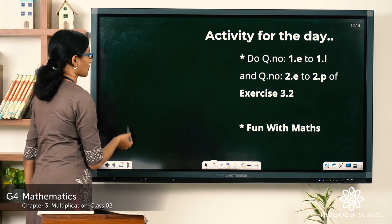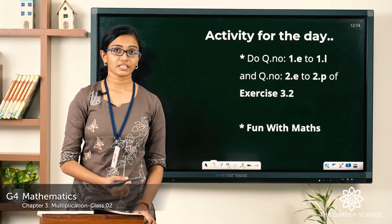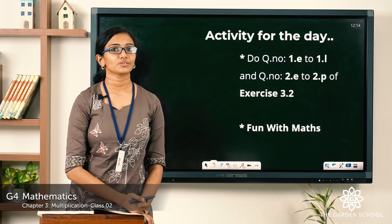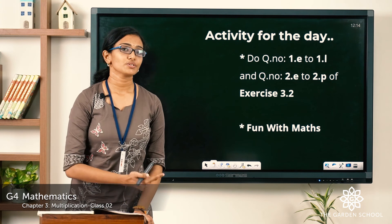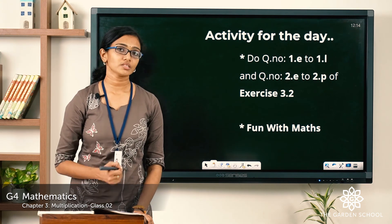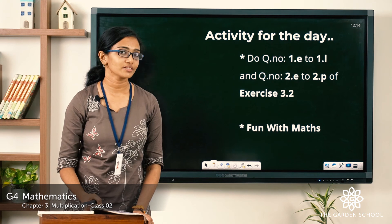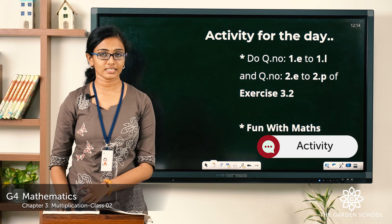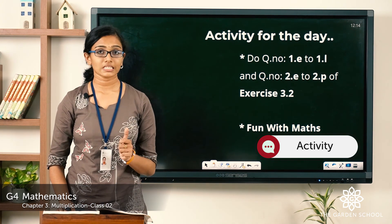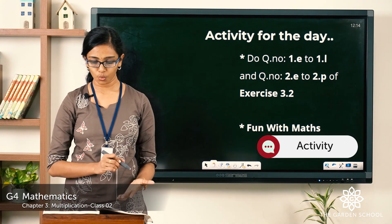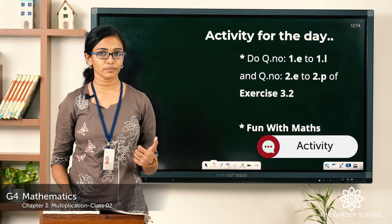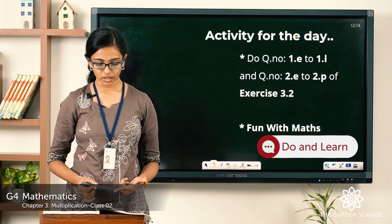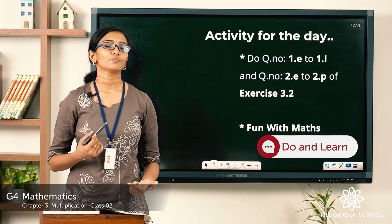Now we were discussing multiplication of a number by 100, 1000 and 10,000 and we also saw some shortcuts to do multiplications easily. Please go through the topic once again and get thorough with the concepts. For the activity for the day, you have to complete the rest of the questions from exercise 3.2. From question 1, find the product, you have to do 1E to 1L. And from question 2, find the product using smart multiplication, you have to do the questions from 2E to 2P.